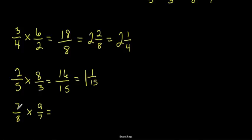And our third question, 7 times 9 is 63, and 8 times 7 is 56. And we can just break that down some more. So, how many sets of 56 go into 63? Well, 1.